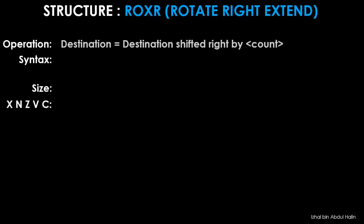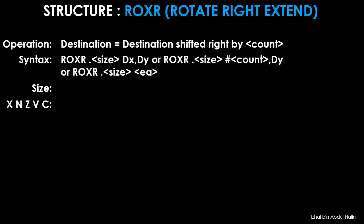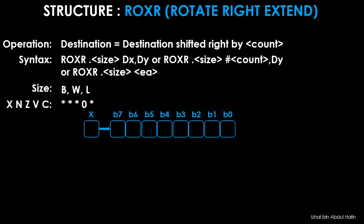The ROXR instruction is used to rotate right data in a destination operand. Data is rotated one bit at a time until the number of rotations equals the specified count. The general syntax shows three variants of addressing modes, with operand sizes of byte, word, and long word. All status registers are affected. In the register structure, the X flag is connected to the MSB, and the LSB is connected to both the C flag and the X flag. Each time data is rotated, bit 0 moves into the C and X flags, and data in the X flag moves into the MSB.